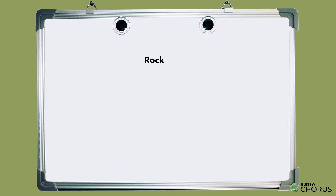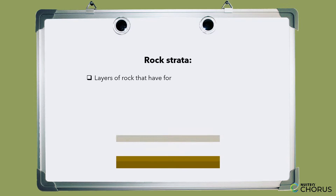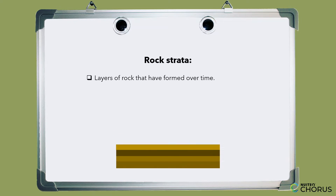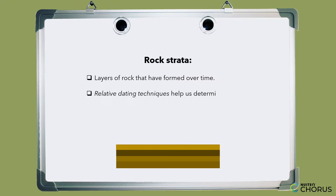Before we begin, let's define some key terms. Rock strata are layers of rock that have formed over time. Relative dating techniques help us determine the age of these layers.